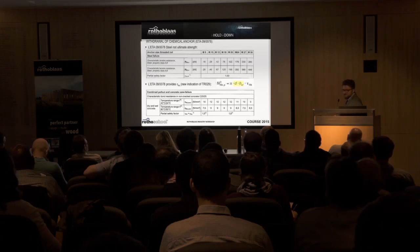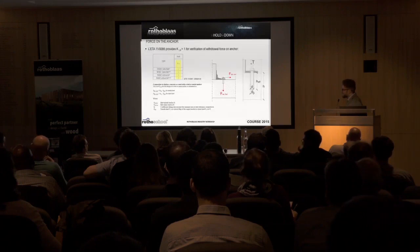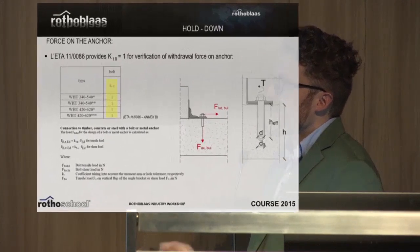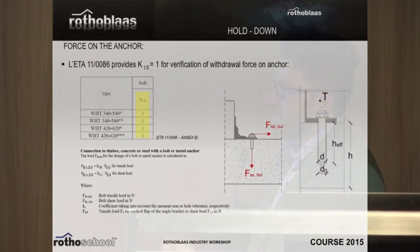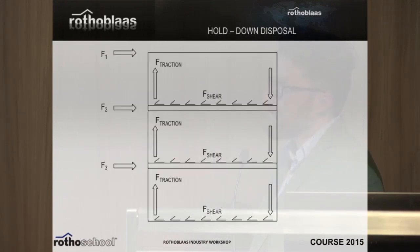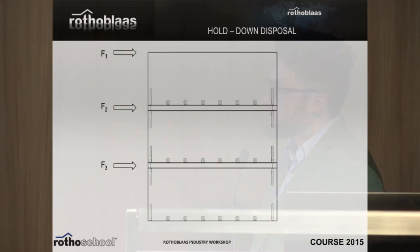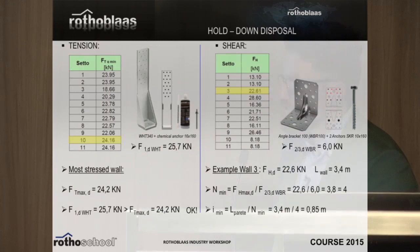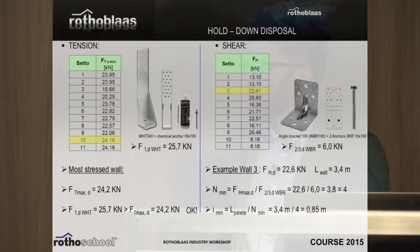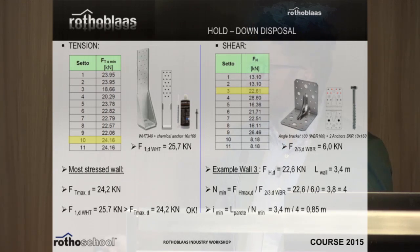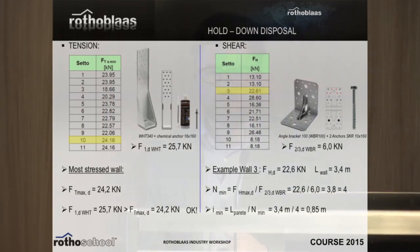Just the design of a hold down can sometimes be challenging. Luckily in our catalogue we put all the values already calculated. The force that you need to resist in tension must be verified into the concrete. And this is the final example: once you have determined the values for your hold down and your shear angle brackets, you verify the most stressed wall — that this force is enough — and you take the linear load along the panel and divide by how many angle brackets you use, making your panel verification in a quite basic way.